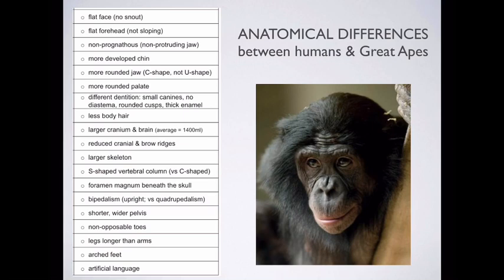For most of us, we have a lot less body hair. There are some families in the Amazon and also in India where the gene for body hair is such that they look like they have fur. But with that exception, the rest of us have very little hair on our bodies in comparison to the great apes.